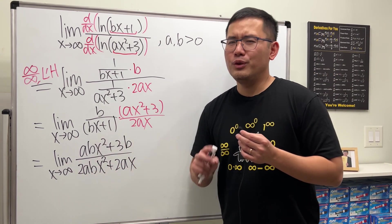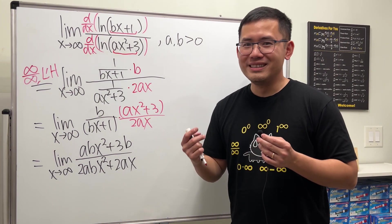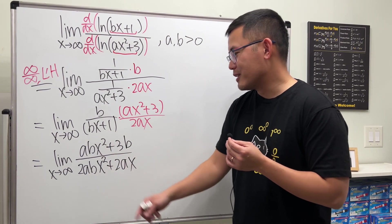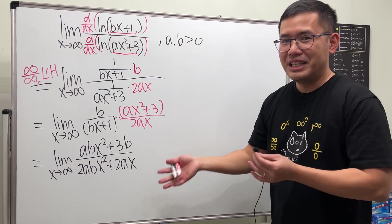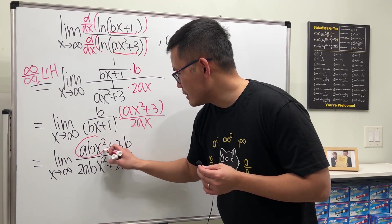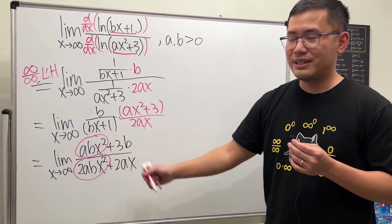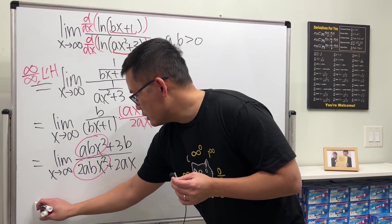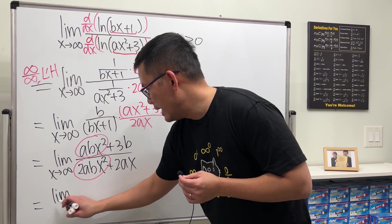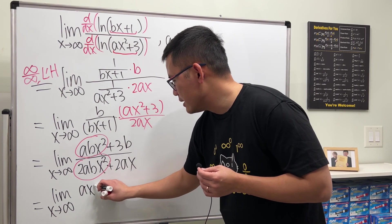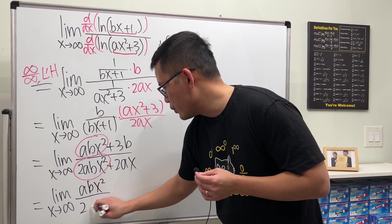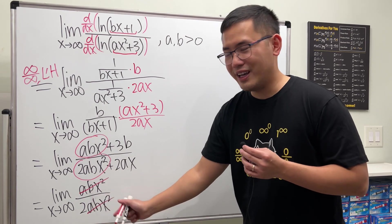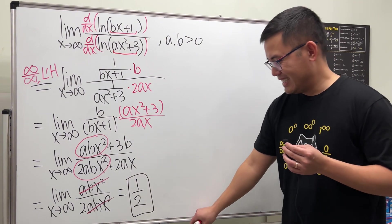When x approaches infinity you have two ways: one, you can still use L'Hôpital's rule, or two, you can use the shortcut. The shortcut is to pay attention to the highest power on the top and the highest power on the bottom and compare them. If your teacher allows it, just focus on the highest-power terms: abx squared on top and 2abx squared on the bottom. These x squareds cancel, and you're left with ab over 2ab, which reduces to one over two.